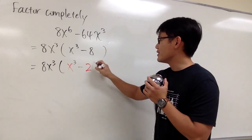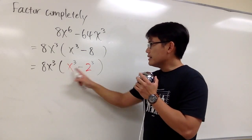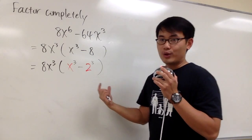Well, 2 to the 3rd power is 8. So, this can be factored with the formula, and we'll go ahead and do that.